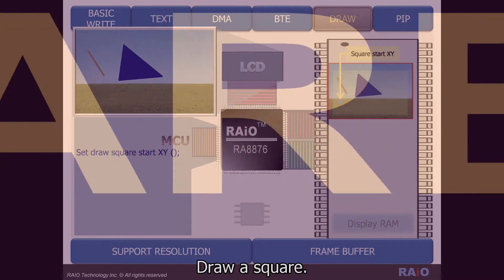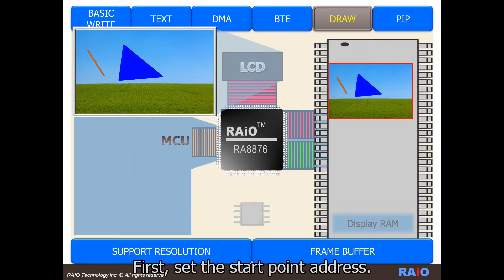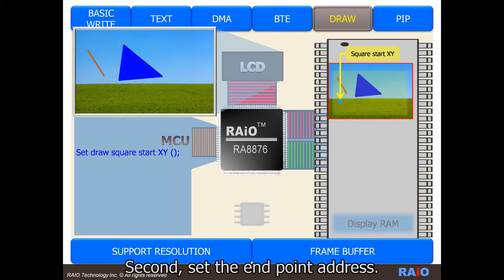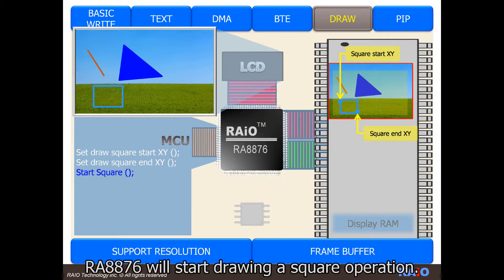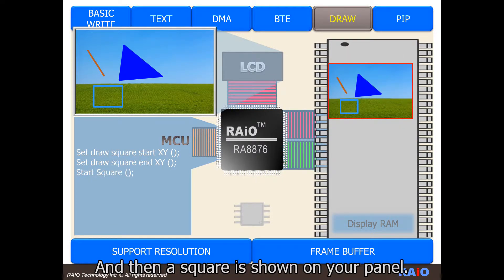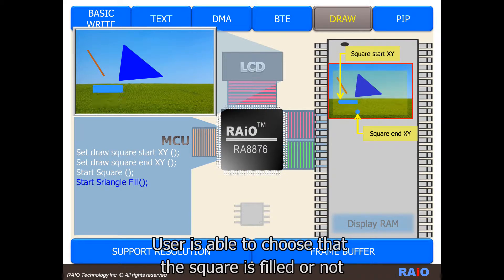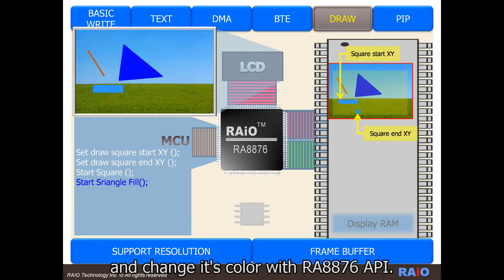Draw a square. First, set the start point address. Second, set the end point address. Third, execute the square's API. RA8876 will start drawing a square operation, and then the square is shown on your panel.